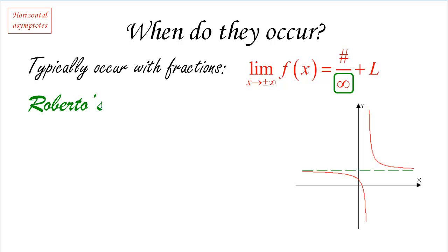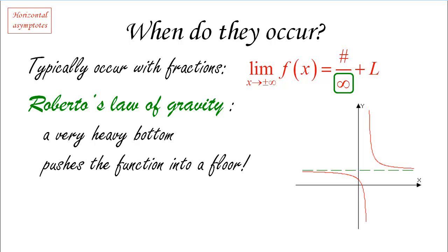So I like to call this Roberto's law of gravity just to parallel my law of balloons that we had earlier. And so the idea is that when we have a very heavy bottom, we're going to have a situation where the whole function is going to be pushed into a floor. So what happens here is that as we're going to positive infinity, there is something very heavy that is going to push the function closer and closer to this horizontal line.